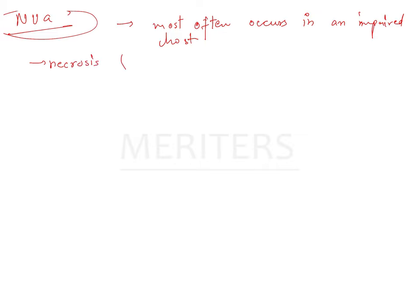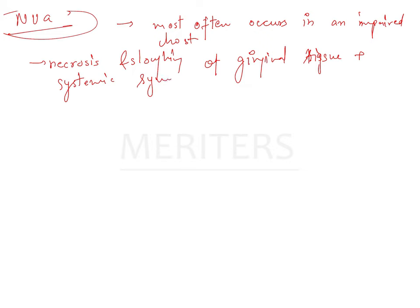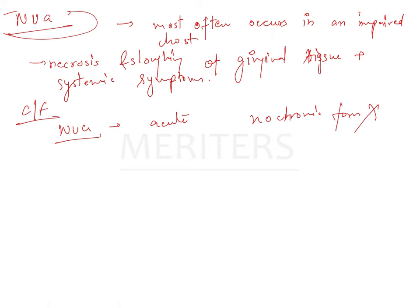Necrotizing ulcerative gingivitis manifests with characteristic clinical signs of necrosis and sloughing of gingival tissue, and may be accompanied by systemic symptoms like malaise and fever. It has been historically identified as an acute disease — no chronic form exists. The term 'ANUG' is frequently used, but 'acute' is a clinical descriptor, not a separate diagnosis.